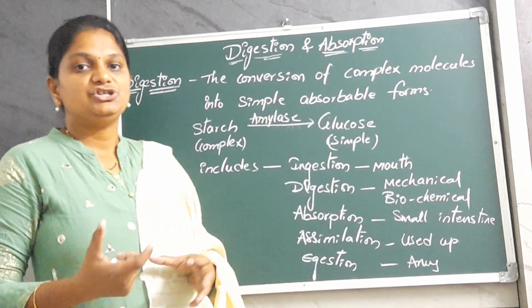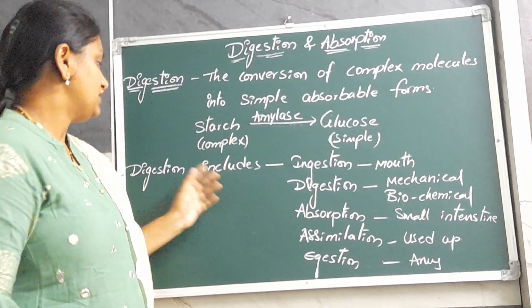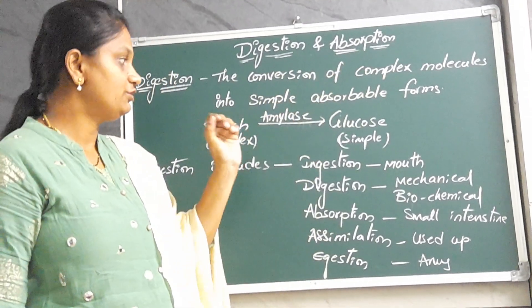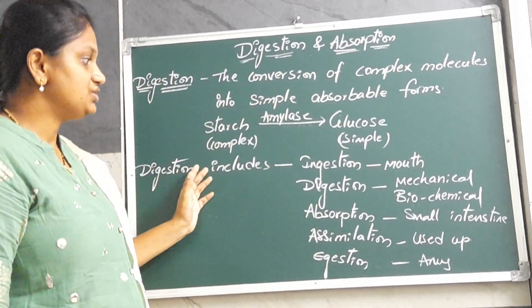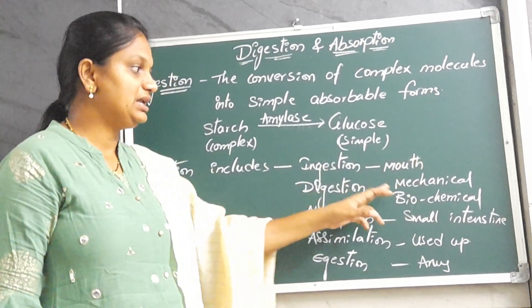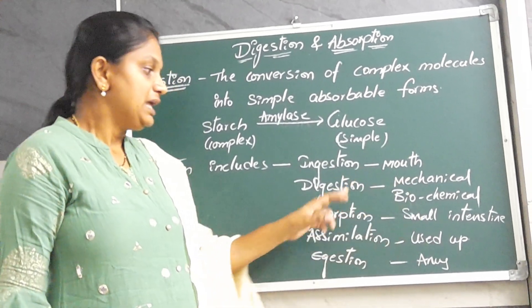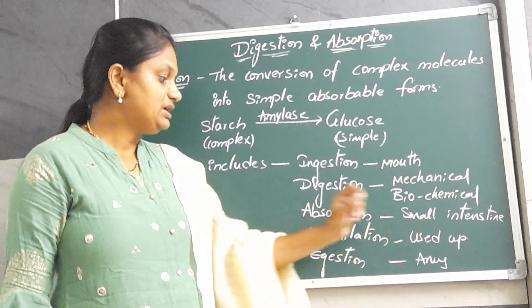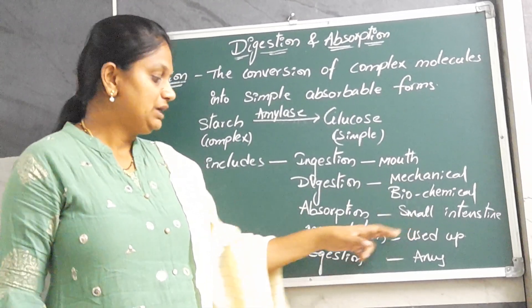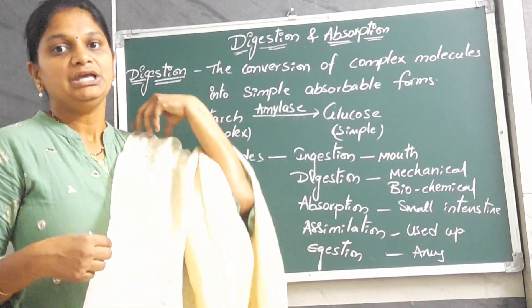So this is a brief explanation about digestion and the steps included in digestion. Digestion is nothing but the conversion of complex food into simple forms. The steps involved in digestion are: ingestion, which takes place through the mouth; digestion, which takes place in the buccal cavity through mechanical and biochemical processes; absorption, which takes place in the small intestine; assimilation, which is using whatever nutrients we absorb; and egestion, which is the elimination of undigested food through the anus.